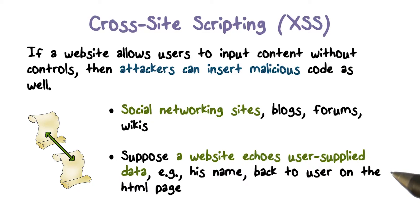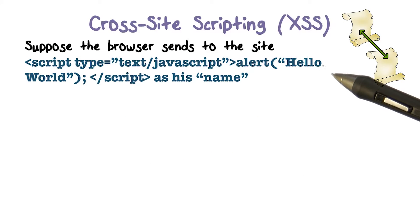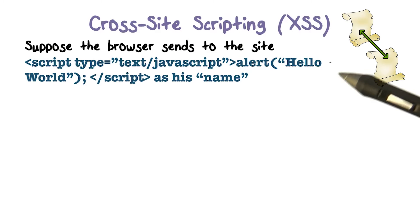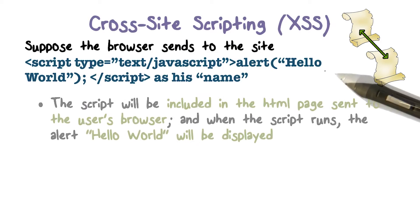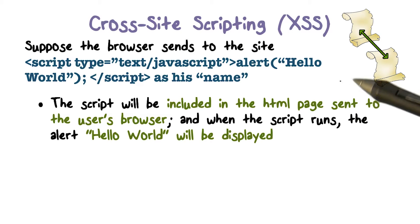Then the website will send back a page saying, hello, Joe. Now suppose instead of sending the user's name, Joe, to the website, the browser sends a script as his name. What's going to happen? The website will take this script as the user's name and echo it back to the web browser.